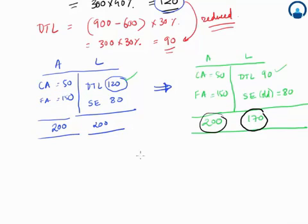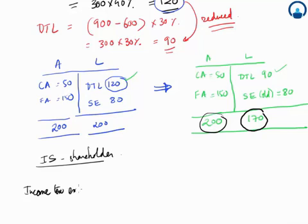Let's look at how this is done. The difference between the two, that is 200 and 170, gets reconciled through the income statement. When we look at the income statement of the shareholders, you'll find one item called income tax expense.